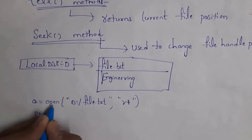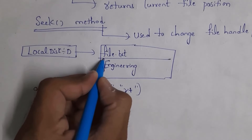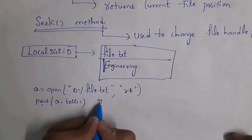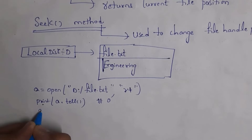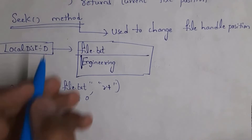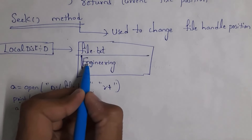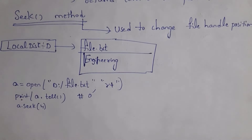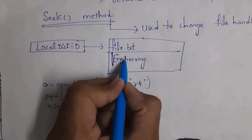Write here print(a.tell). Whenever I open this file, my cursor is at index number 0, the first position. So whenever I run this line of code, it will display output 0, because my cursor is at index number 0. Next, I am writing here a.seek(4). The seek function is used to change the file handle position — that is, to change the cursor position. For example, I want to place the cursor after 4 characters. So just write here a.seek(4), which will place my cursor after 4 characters.